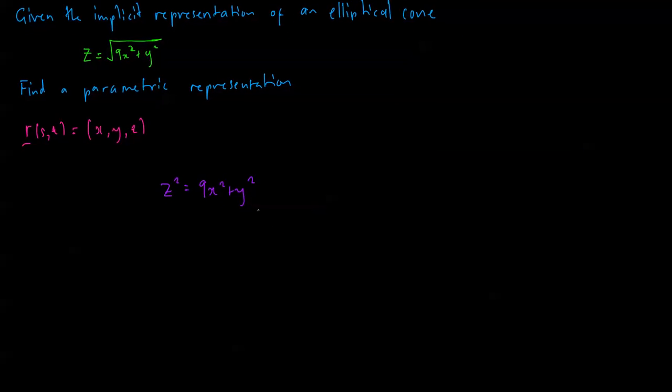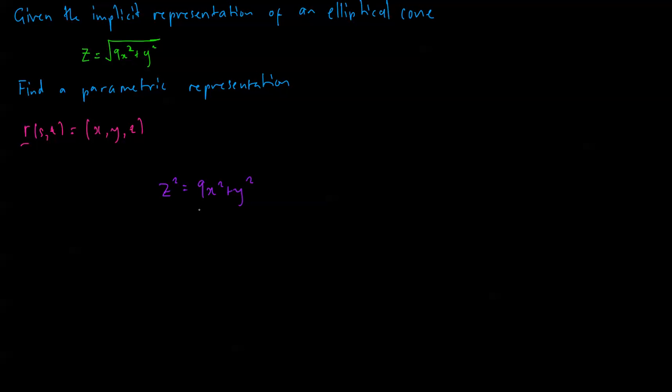All right, so the next thing we need to do is look at the fact that on the right hand side, we have something squared plus something else squared. So let's call this a squared plus b squared, and it's equal to z squared.